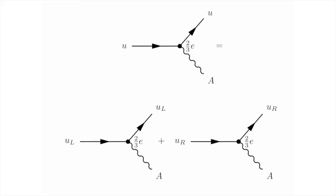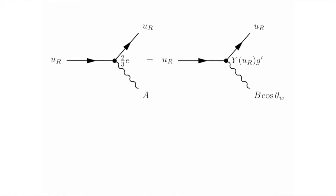However, the photon is a combination of the B and the W3. Let's see how that works in the case of the right-handed up quark, which is a little simpler. Now, we know that the W3 just doesn't interact with right-handed particles. So the only part of the photon which actually interacts with the right-handed up is the part involving the B. The mixing angle, cos theta weak, multiplies that interaction. Now we can move that mixing angle from the field of the B to be part of the interaction strength, because all of these quantities are just multiplied together.